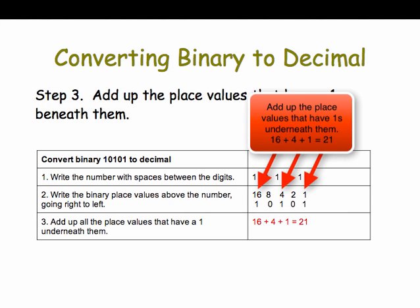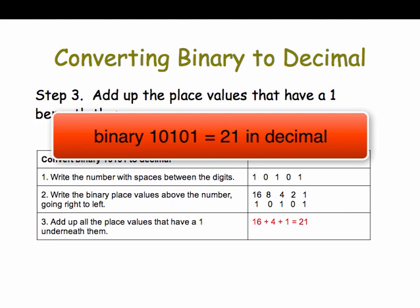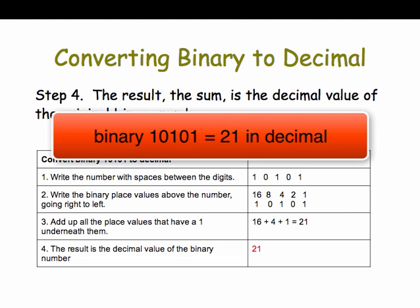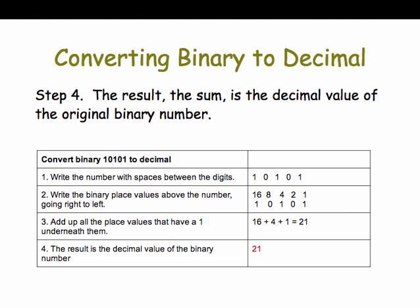Next, add up all the place values that have a 1 underneath them. In this case, the sixteens place, the fours place, and the ones place have 1, so we add up 16 and 4 and 1 and that gives us 21. And that's the result — that's the value of 1 0 1 0 1 in decimal. Now that wasn't hard, was it?